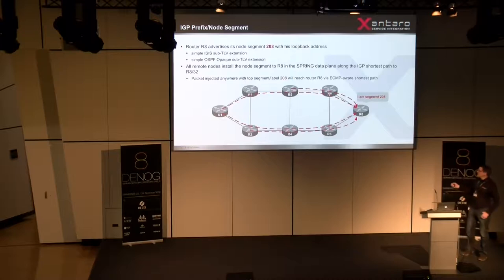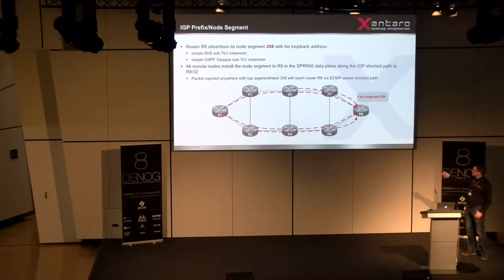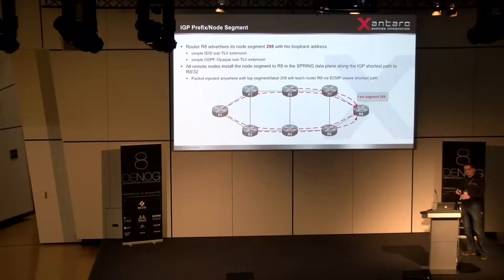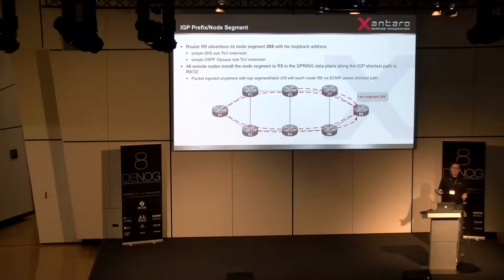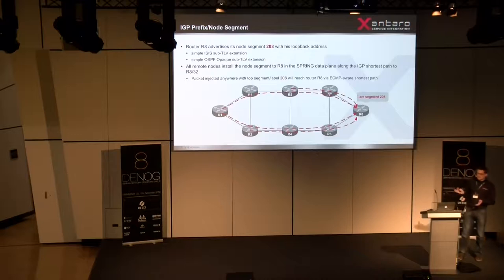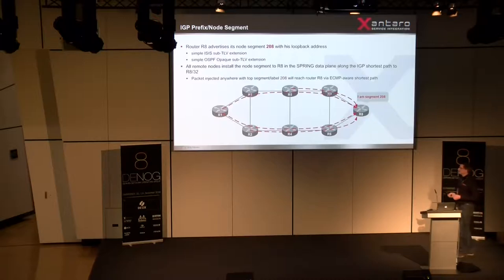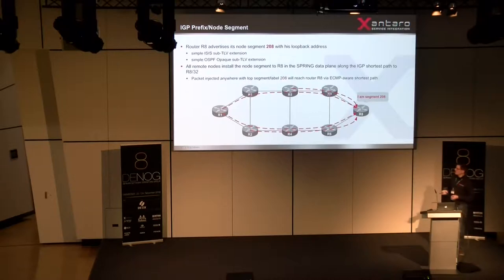Wherever you enter a packet with label 208 — whether you put it to R3 or R5 — it will always head towards R8. If it's on R1, R1 has the possibility to make ECMP, so it can do flow-based load balancing between the two label switch paths because the IGP is capable of this. The IGP will indicate there are two possibilities to reach that router, so it can also reach segment 208 via two routers if the link metrics are equal on all systems.